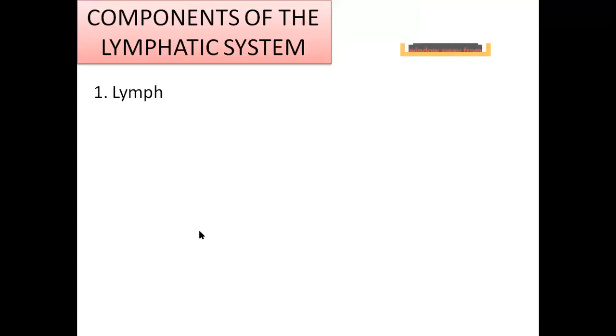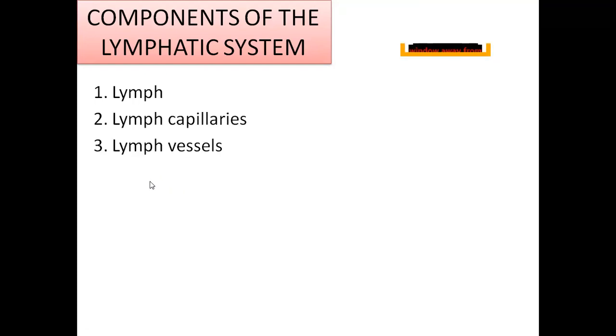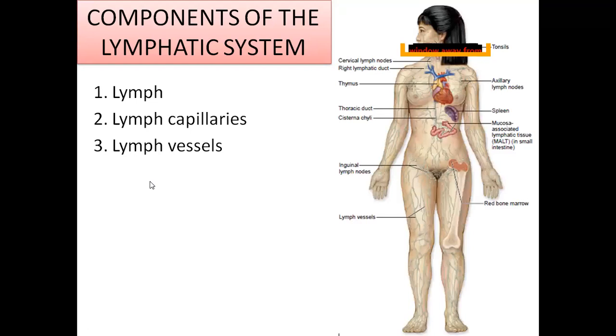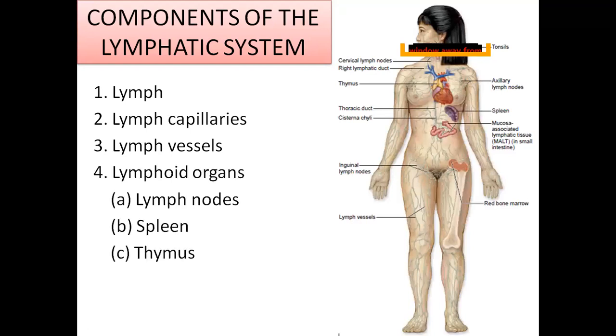Coming to the components of the lymphatic system: the lymphatic system has lymph, lymph capillaries, lymph vessels, lymphoid organs, lymph nodes, veins, and of course we also have the epithelial lymphoid system.